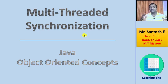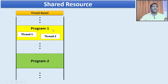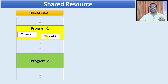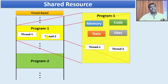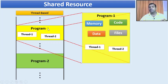What is synchronization going to be about? When I say threads, I am going to have a program. In a single program I am going to have more than one thread, and by default all these threads share the same address space of the program. It does not share only the address space — it also shares memory, code, data, files, and any resource or property of the program.